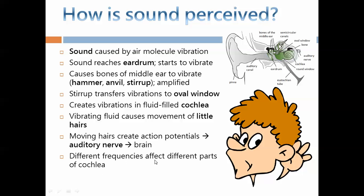Different frequencies affect different parts of the cochlea. Lower tones versus higher tones will have a different effect on little hairs in your cochlea and so that's why your brain can tell the difference between louder sounds and higher frequency sounds and lower frequency sounds.